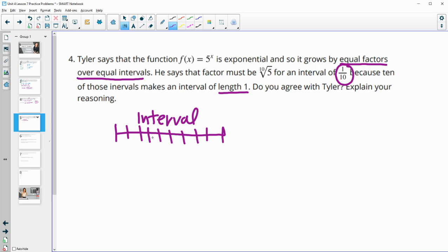That means we're going to take this number times itself 10 times, and that needs to equal our overall growth factor of 5. How do we solve this? Undoing an exponent of 10 would mean we'd have a 10th root of 5. So agree with Tyler, yes, because if we're going to multiply a number together 10 times to equal something, the undo of that is a 10th root.